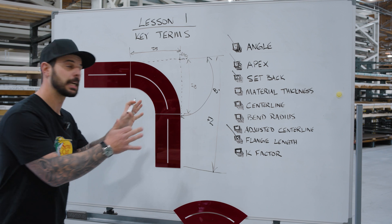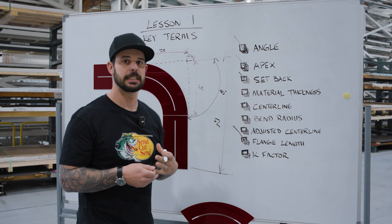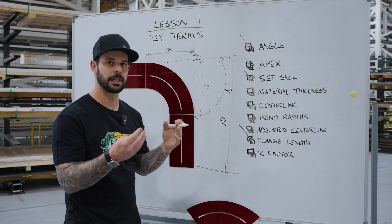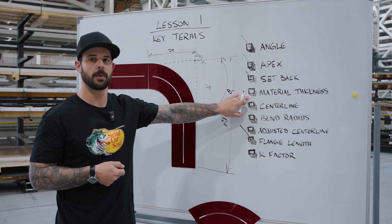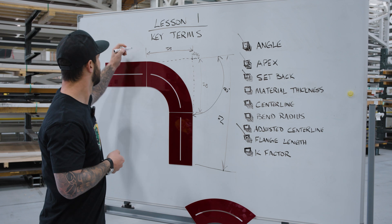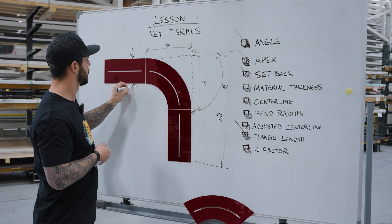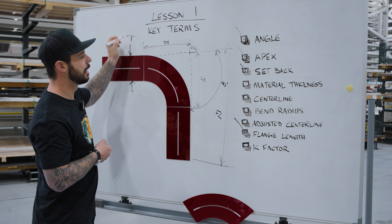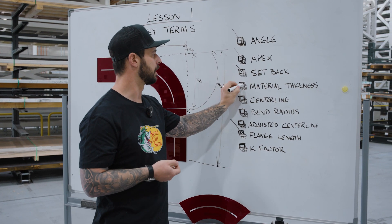From there we're going to move to material thickness. Material thickness is the unformed raw material thickness that you're going to be selecting — what you'll see on our website when choosing your material. This is just the thickness of the unbent section, and we're going to call that capital T as we move forward in these videos.